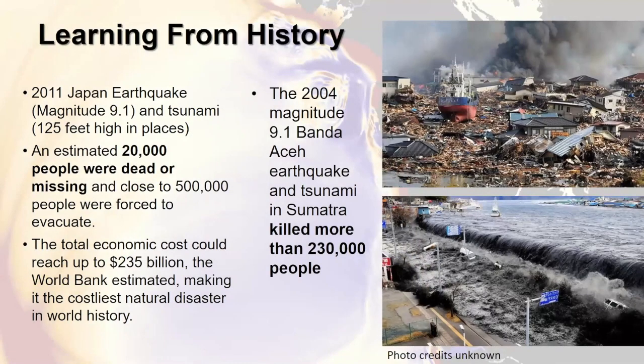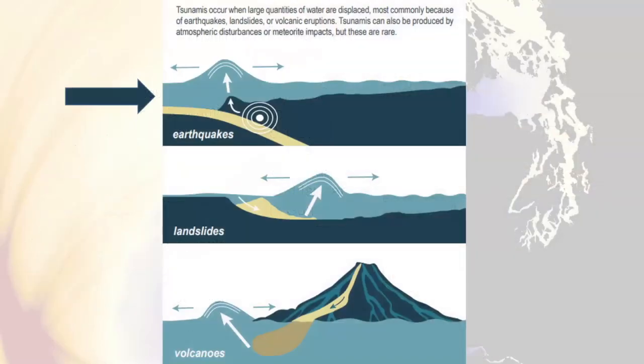Carrie talked about Washington's geological history and geologic evidence for past tsunamis and earthquakes. Another way that we learn about tsunami hazards is from experience. The two most recent and devastating tsunami events are the 2011 Japan earthquake and tsunami and the 2004 Sumatra earthquake and tsunami. These events killed hundreds of thousands of people and caused billions of dollars of economic loss. They are a devastating reminder of the potential for earthquakes and tsunamis on our coastline. Tsunamis are caused primarily by three ways: earthquakes, landslides, and volcanic eruptions — all possible in Washington State. Today I'm going to be primarily focusing on earthquake-sourced tsunamis.